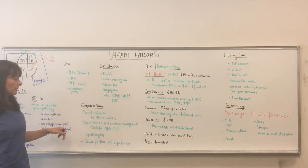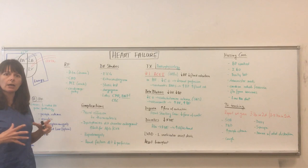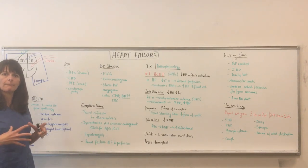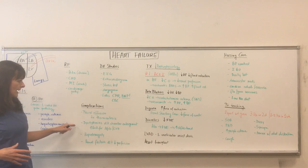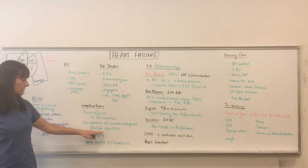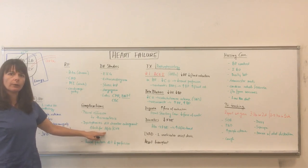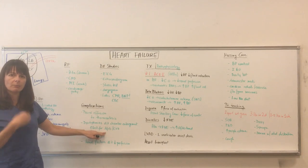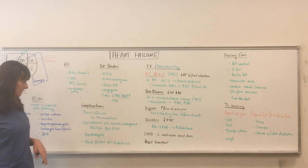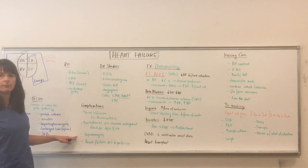Another complication is dysrhythmias, because the heart chambers get enlarged due to having to pump around this increased fluid volume. That puts the patient at risk for atrial fibrillation. We know that atrial fibrillation is a risk factor for stroke, because the blood gets swirled around in the atria and clots can break off, causing a stroke or DVT or other clots in the system. It can also lead to hepatomegaly and eventually liver failure.